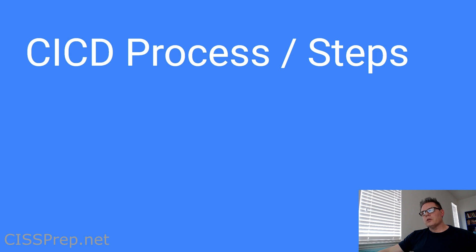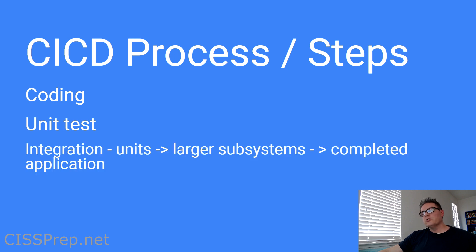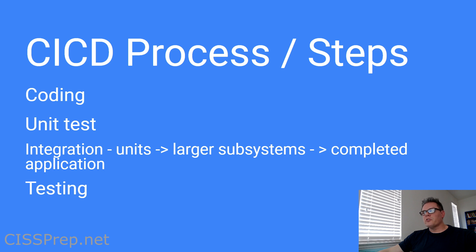The first step is coding — this is where the software unit is written. Next, we have testing, where unit tests are performed. After that, we have integrating the software into units of larger subsystems and eventually into a completed application. Then we need to test those larger subsystems and completed applications.